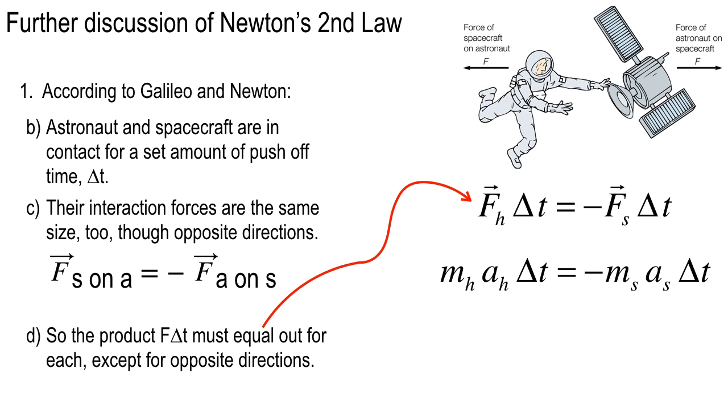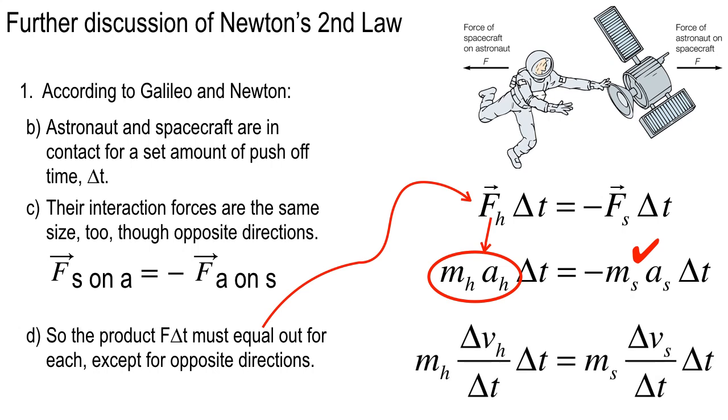So the product, and here I'm switching to subscript H for the human because the letter A is also used for acceleration. F subscript H, the human, times the interaction time equals the opposite of the force on the spacecraft times delta T. If you think about it, each of those F's are also M A's. The mass of the human times the acceleration of the human times delta T equals this, and the same thing on the spacecraft side. That's basically an application of Newton's second law, F equals M A.